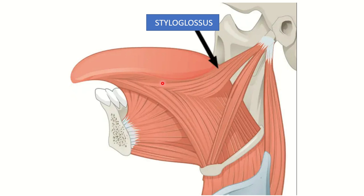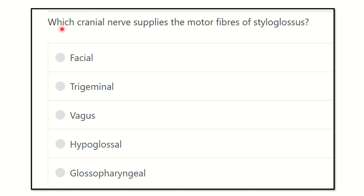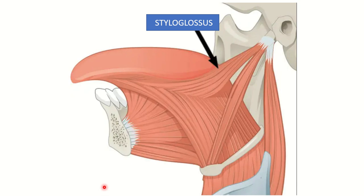Welcome to another question and answer session for MRCS exam. The question is: which cranial nerve supplies the motor fiber to styloglossus? Styloglossus is one of the muscles of the tongue. The options are: facial nerve, trigeminal nerve, vagus nerve, hypoglossal nerve, and glossopharyngeal nerve.